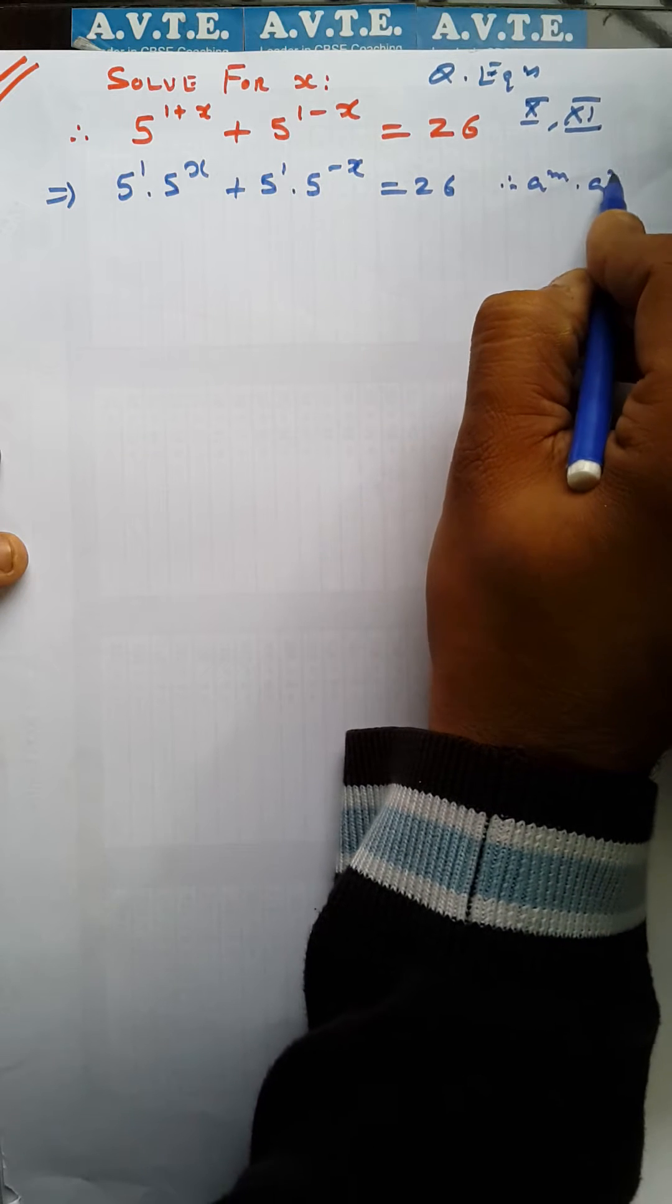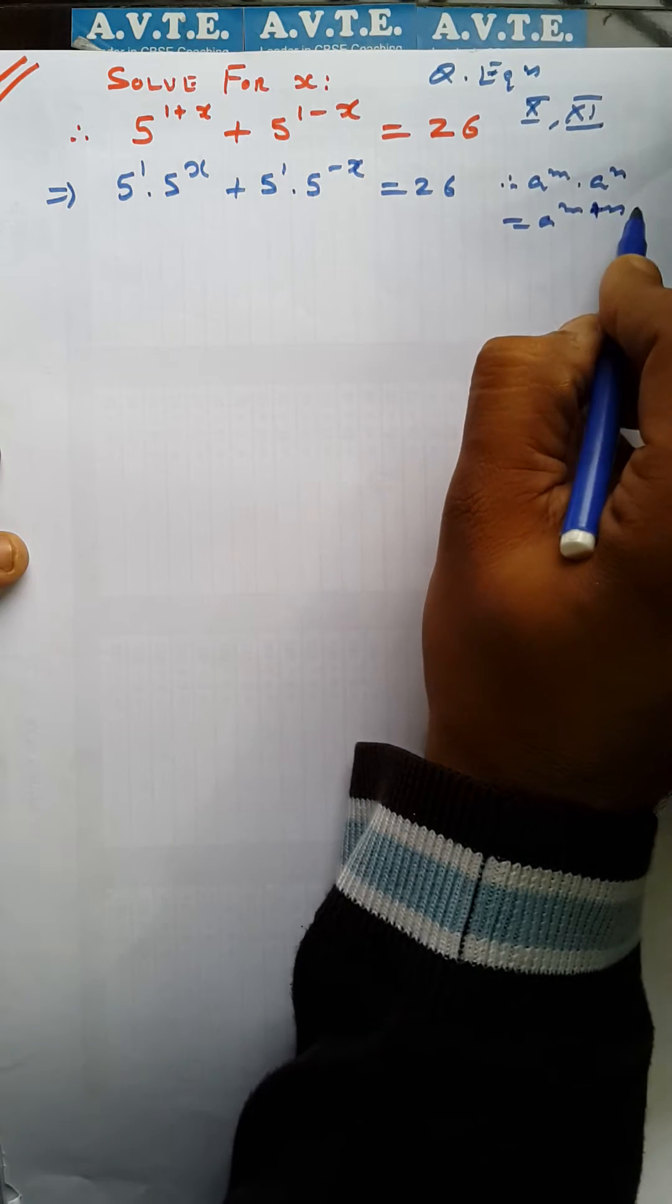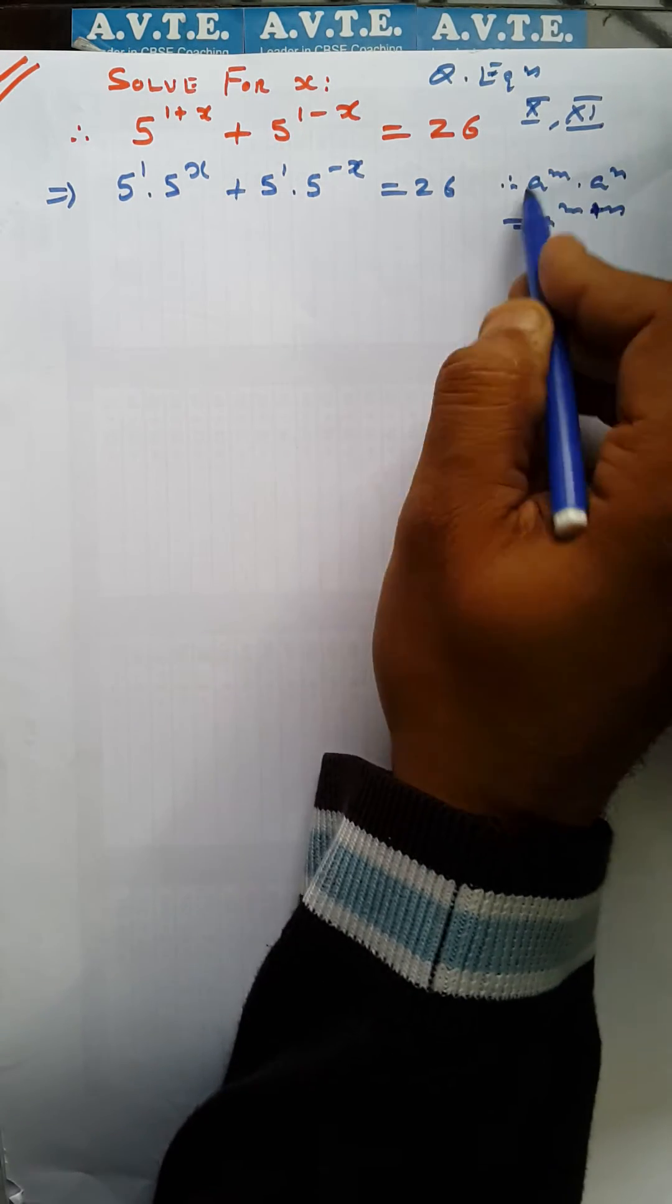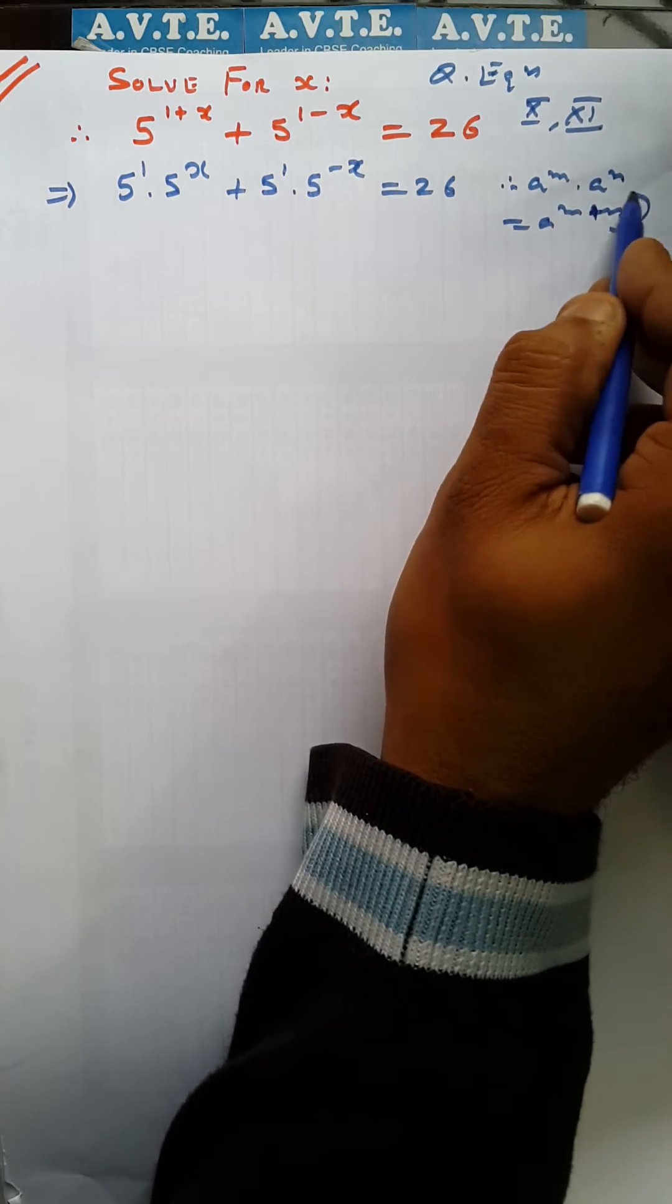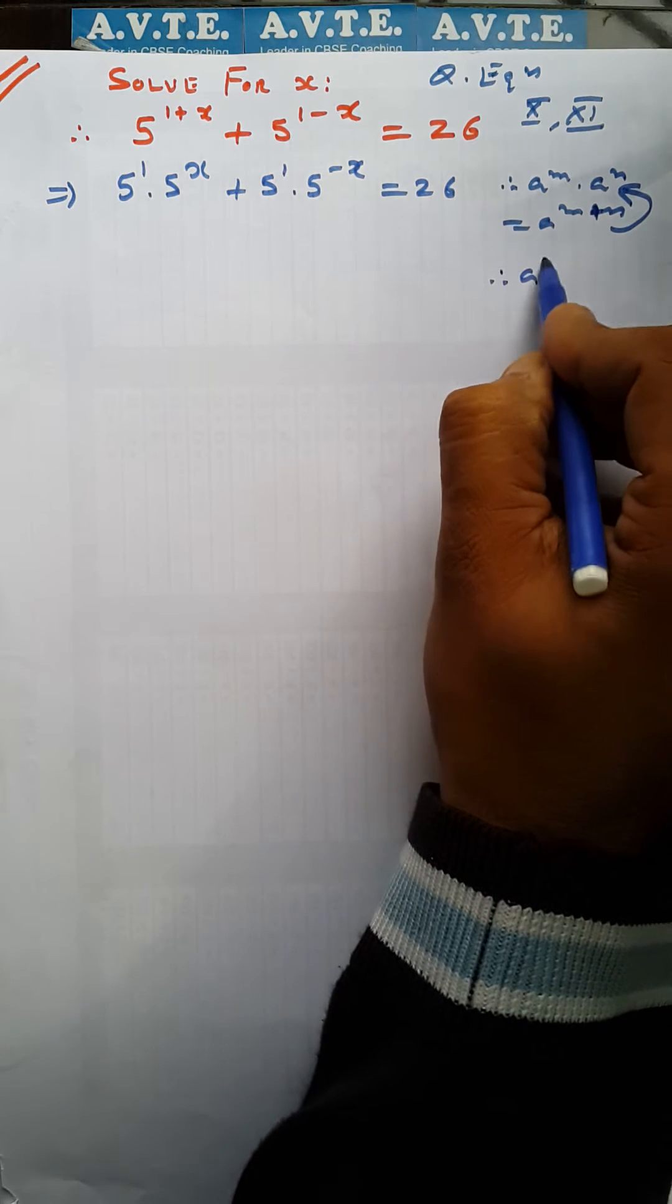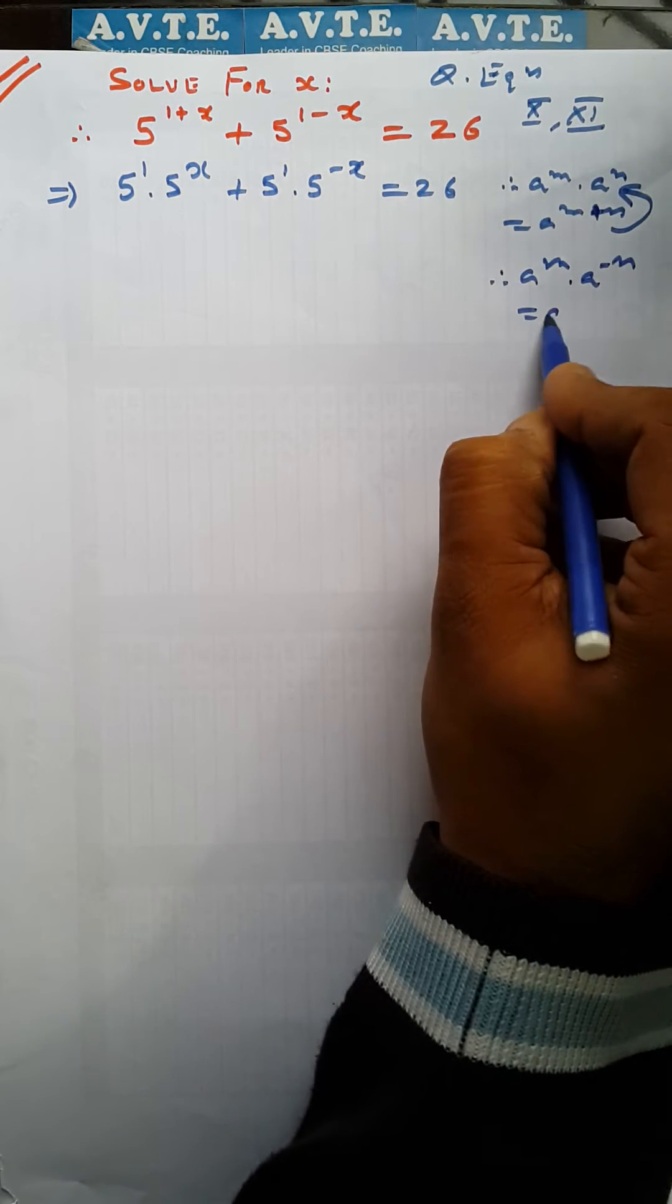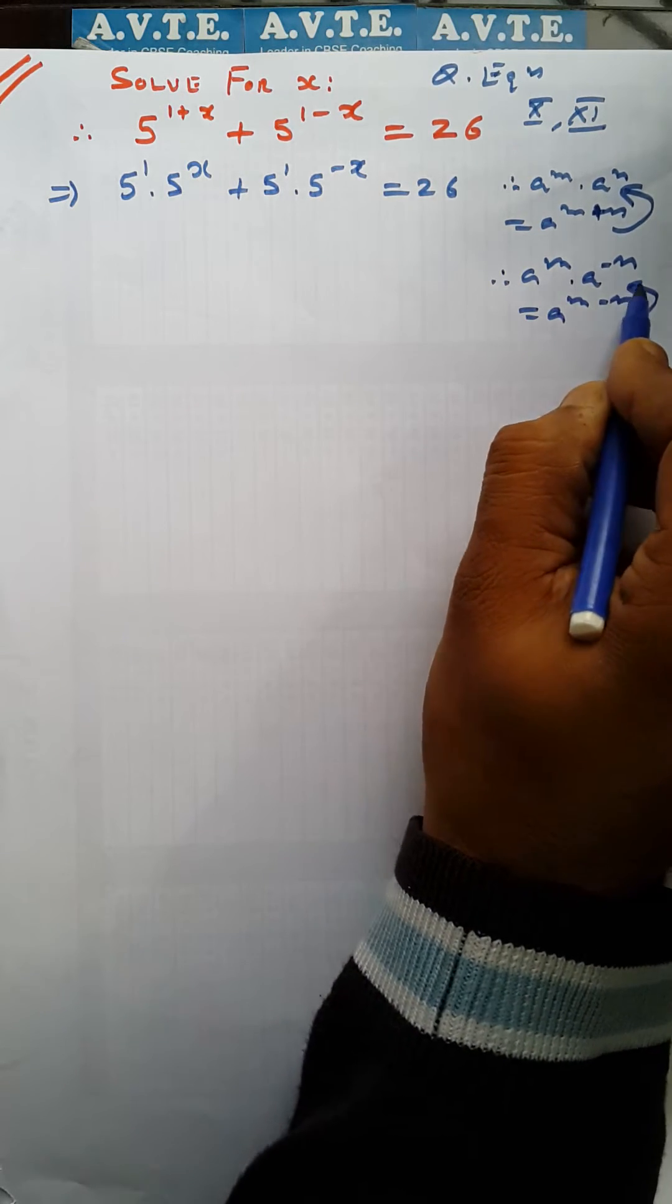a raised to the power m times a raised to the power n is a raised to the power m plus n. We just do this process generally in exponents. Here we do the reverse. a raised to the power m times a raised to the power minus n is a raised to the power m minus n. We just did this process here.